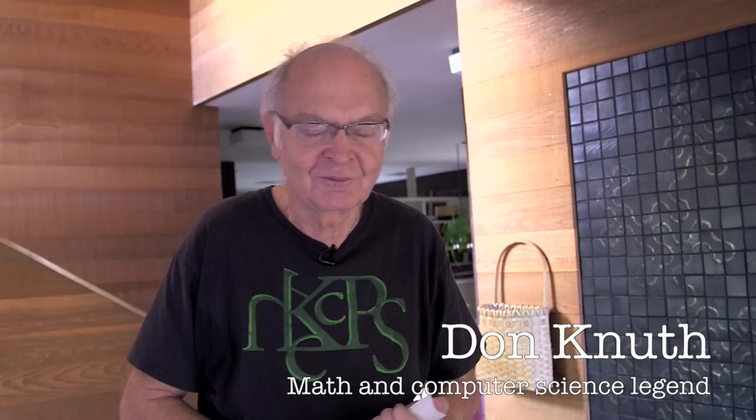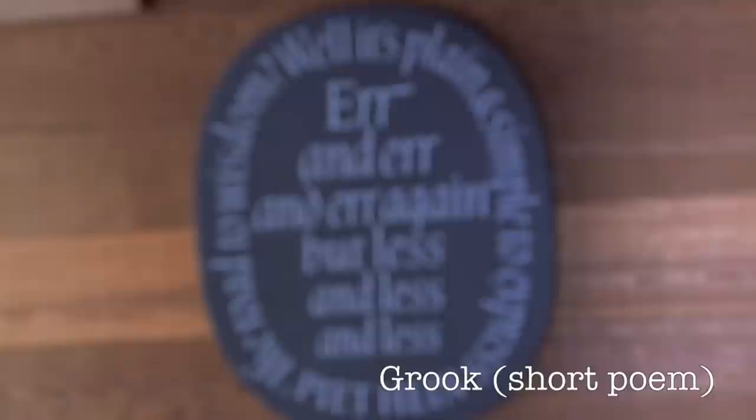And so you see two things. One of them is the dragon curve, I'm going to explain to you more about in a minute. And another one is this work here, which is a Grooke by Piet Hein.